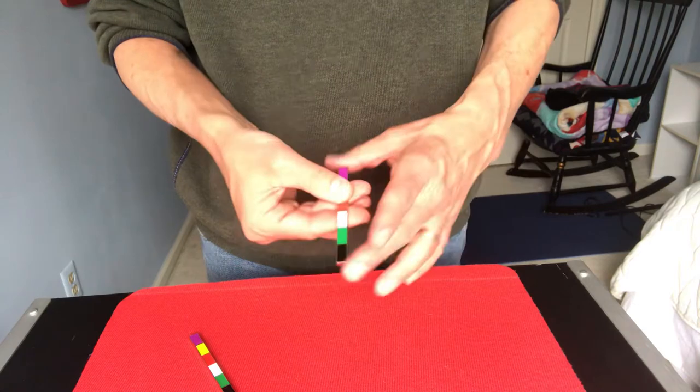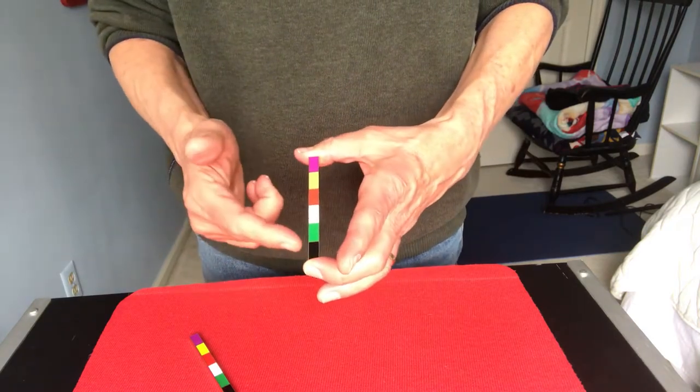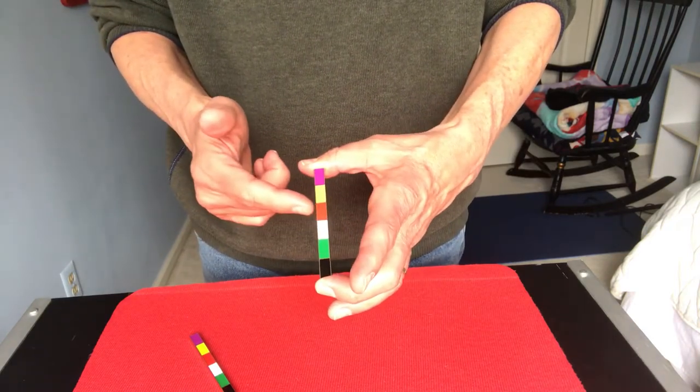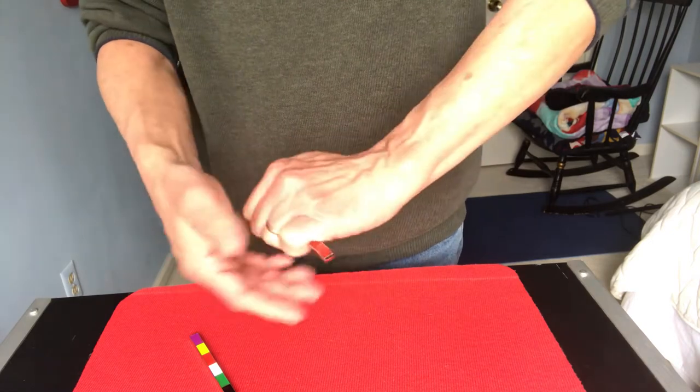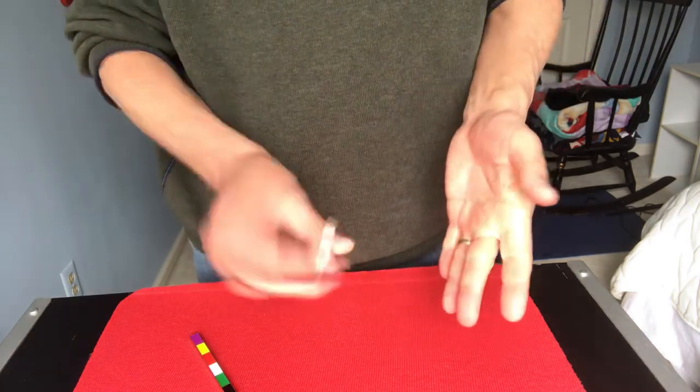You have them name a number. So they name four. You go one, two, three, four. You end up on the red one. You run it through your hand and they all become red.